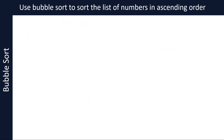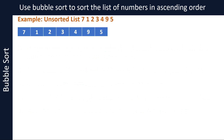Let's take an example and apply the steps in the bubble sort algorithm. Imagine you have been given the unsorted list of numbers 7, 1, 2, 3, 4, 9, and 5, and you need to sort the list in ascending order — that is, rearrange the numbers so they are in order from smallest to largest. Now let's work through the steps. Take the first two items in the list, 7 and 1, and compare them. Since 7 is larger than 1, they are in the wrong order, so swap them.